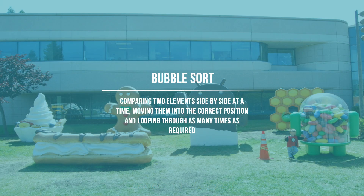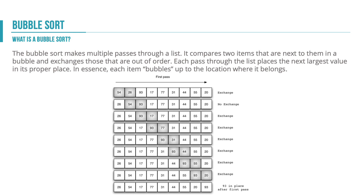Our first sorting algorithm is a bubble sort. A bubble sort compares two elements side by side at a time, swapping them into the correct position if needed. It repeats that bubbling process over and over again until the list is sorted. A bubble sort works in something called passes. A pass means going through the entire list one time, but it repeats that over and over again, calling each repetition a pass.